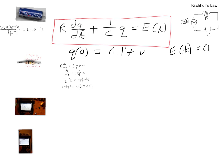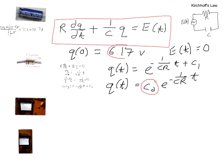That means that I'm going to have Q of T is equal to E to the negative 1 over CRT plus my C1, but that's really just my initial condition. So Q of T, I'll call this C naught E to the negative 1 over CR times T. This is my initial condition. And remember, our initial condition was 6.17 volts.